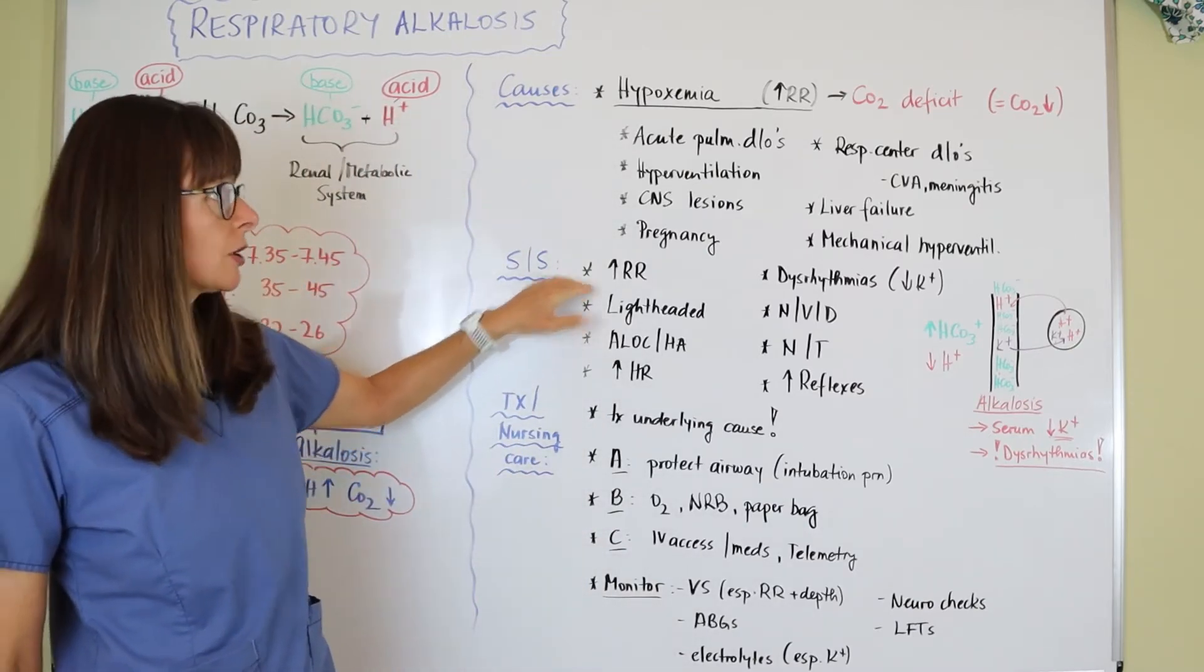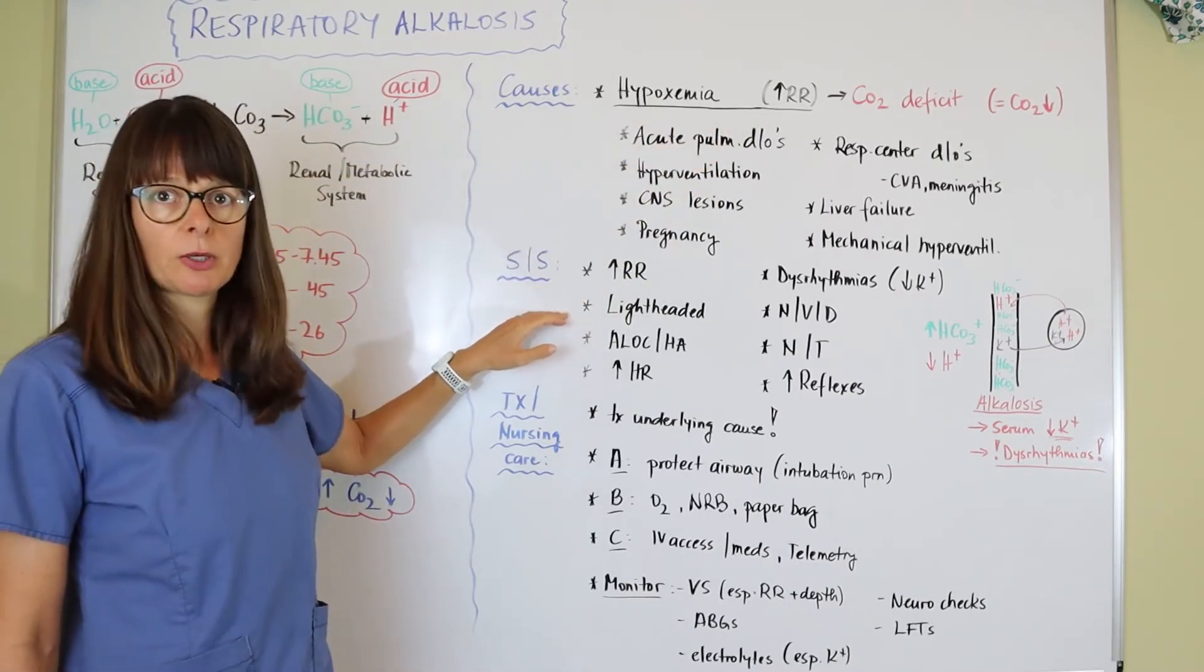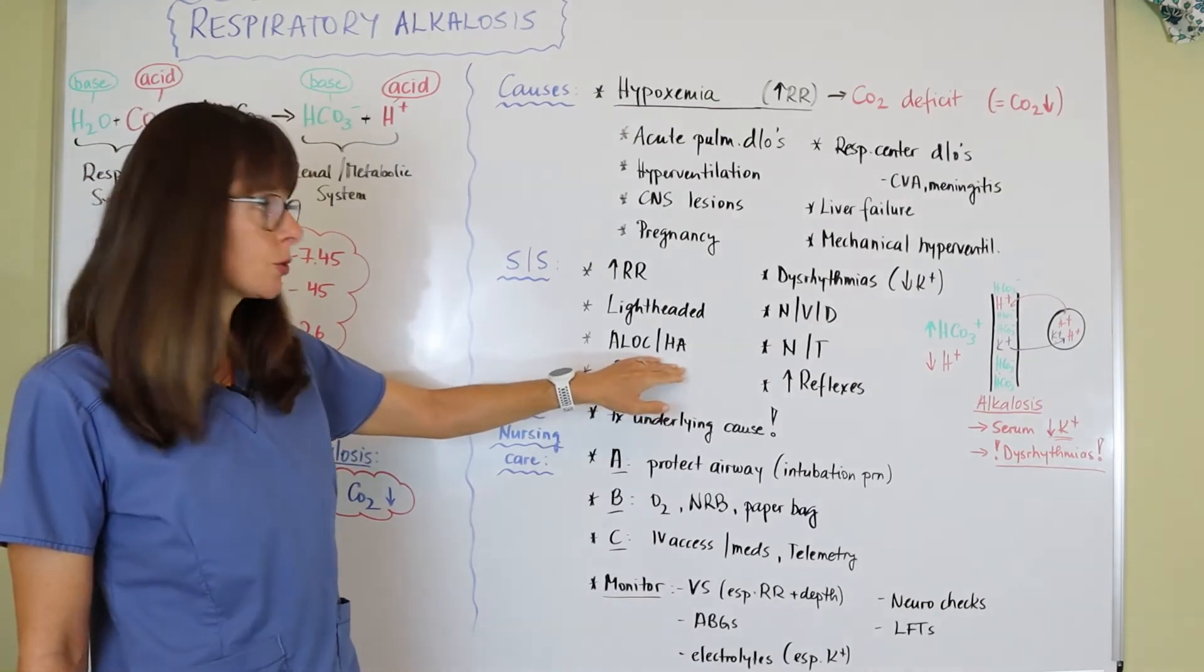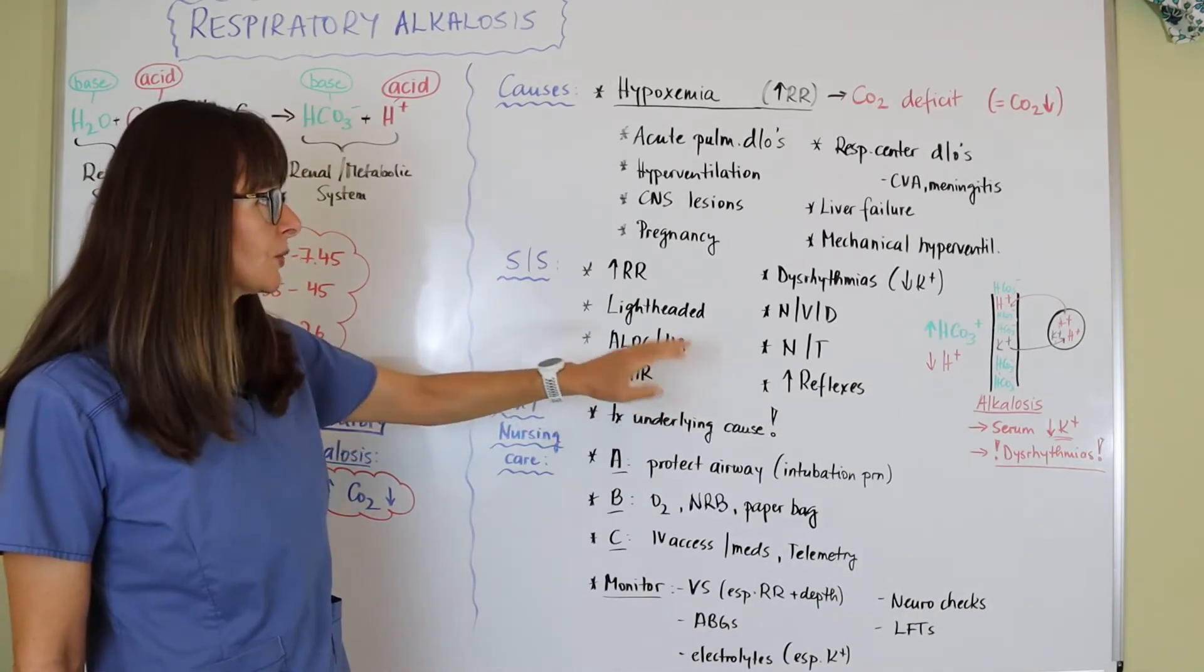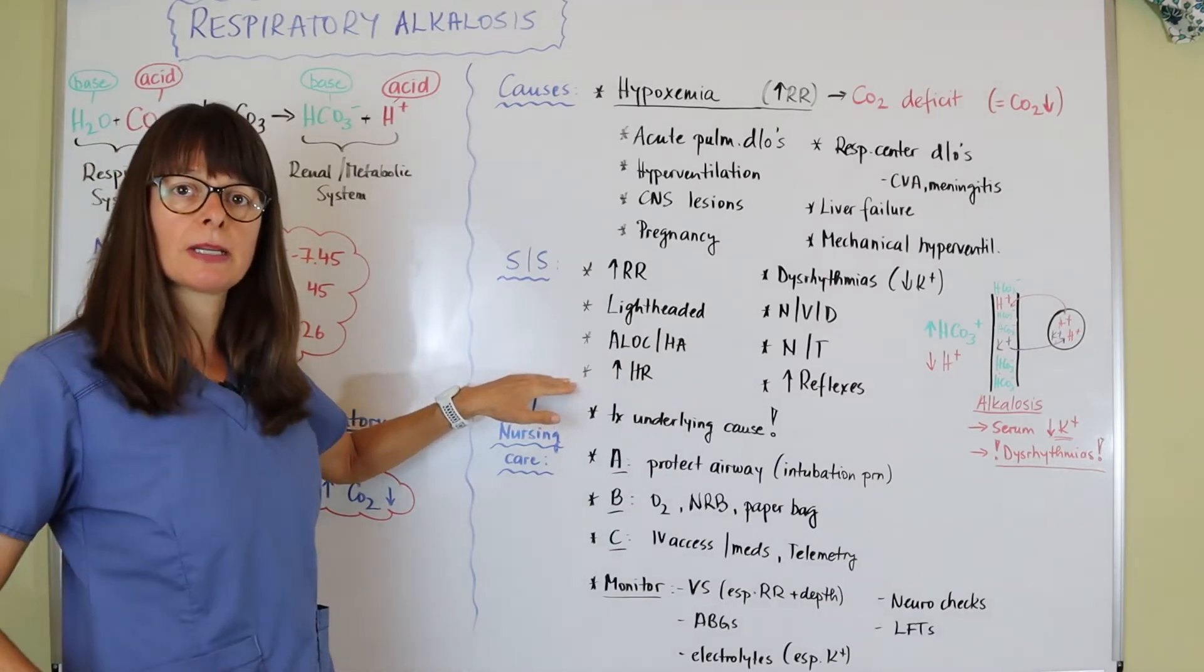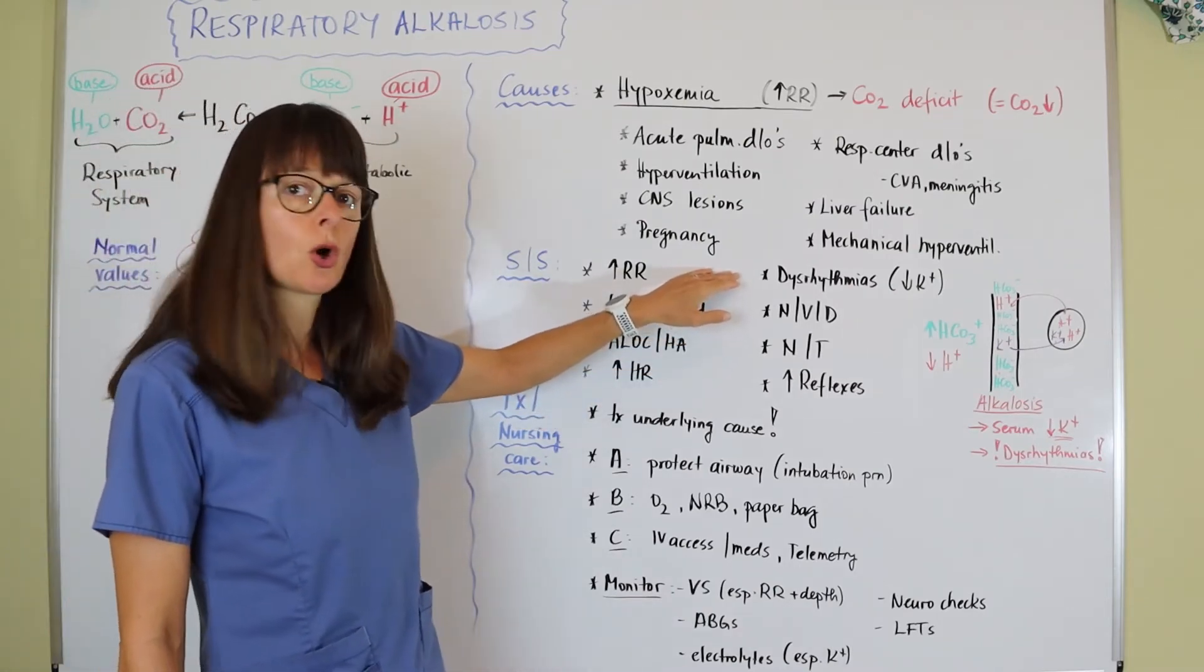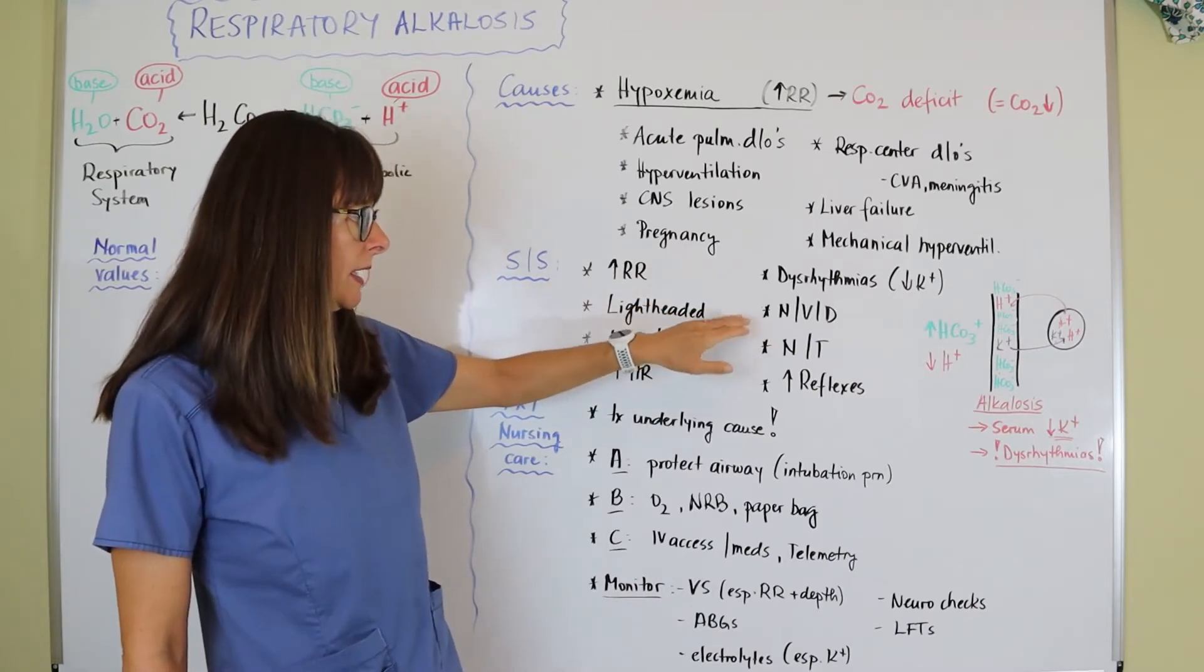Signs and symptoms: the patient will have an increased respiratory rate. They'll complain about being lightheaded, might have an altered level of consciousness or a headache as that CO2 leaves the body. There will be an increase in heart rate—just picture somebody who has pneumonia in respiratory distress.